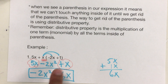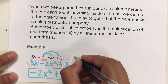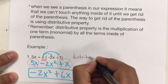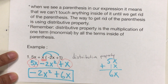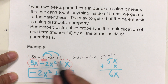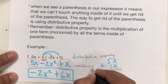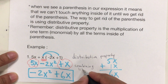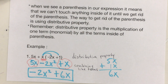Again: distributive property and then combine like terms. We're doing the step from before, but we're adding the distributive property. And when we put together the terms that have the same variable raised to the same power, that's called combining like terms. Now let's look at some other examples.